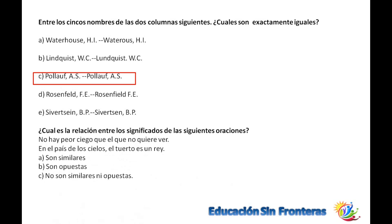¿Cuál es la relación entre los significados de las siguientes oraciones? No hay peor ciego que el que no quiere ver, ni en el país de los ciegos el tuerto es rey. La primera habla de ignorar algo. No hay peor ignorante que el que no se quiera dar cuenta de las cosas. Y la segunda habla de capacidades. Así que no son ni opuestas ni similares.